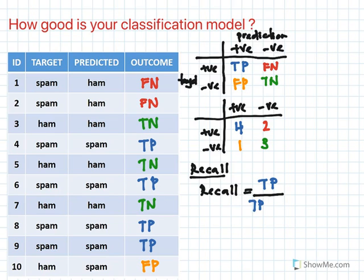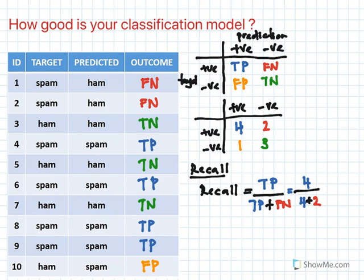Recall equals true positive divided by true positive plus false negative. For our case here, that is 4 divided by 4 plus 2, which gives us 4 over 6. So that is your recall for this example.